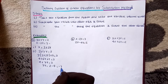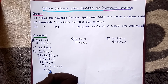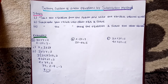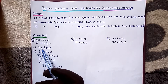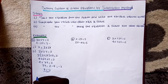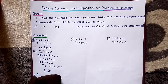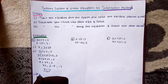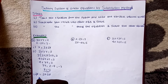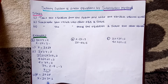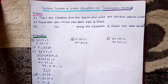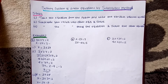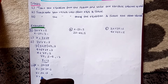So 7y equals minus 7, and the y value is minus 1. This gives us the value of x. If x equals 3 plus 2y, substituting y equals minus 1 gives x equal to 3 plus 2 times minus 1, so x equals 3 minus 2, which is 1.